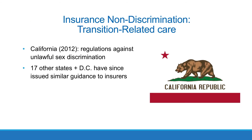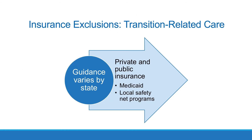In 2012, California became the first state to issue regulations to insurers stating that these blanket exclusions constitute unlawful sex discrimination. Since then, 17 other states and the District of Columbia have issued similar guidance to insurers in their states. In some states, nondiscrimination guidance applies to private as well as public insurance, for example Medicaid or local safety net programs. In some states, guidance only applies to private insurance. In some states, there is parallel guidance for public insurance. The specificity and limits of the nondiscrimination guidance in each state varies.